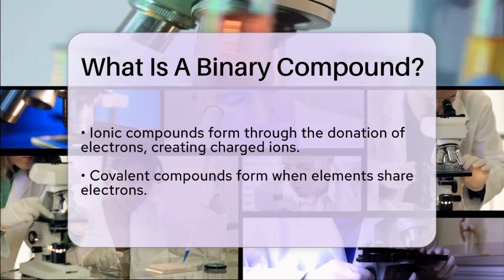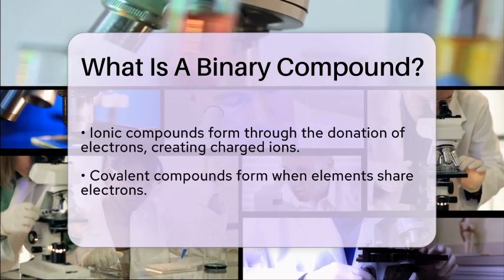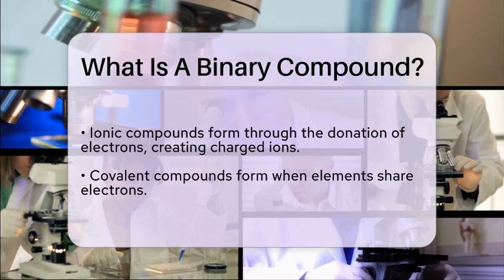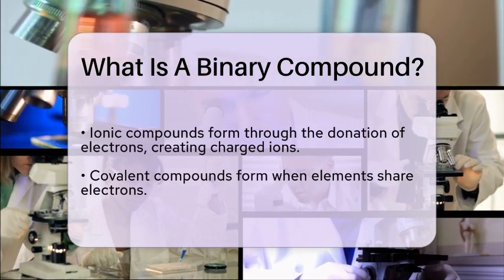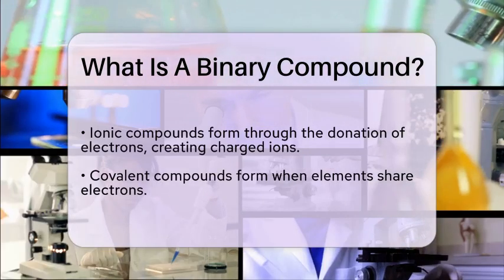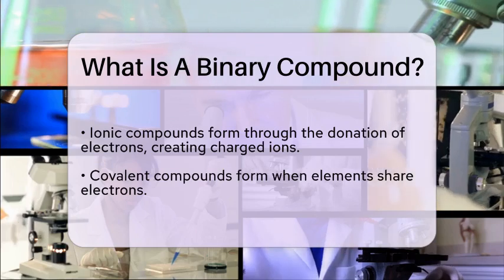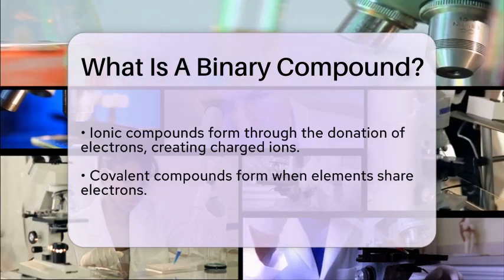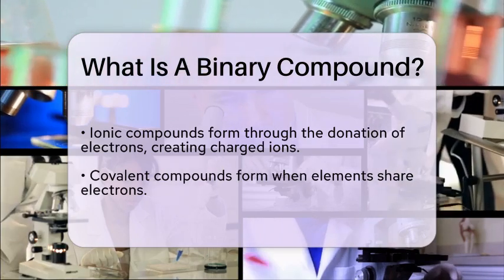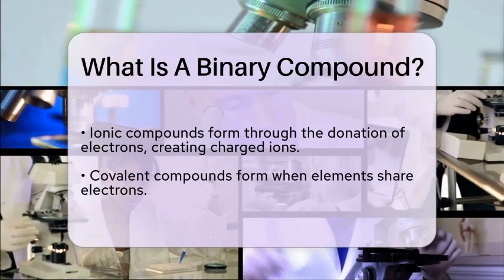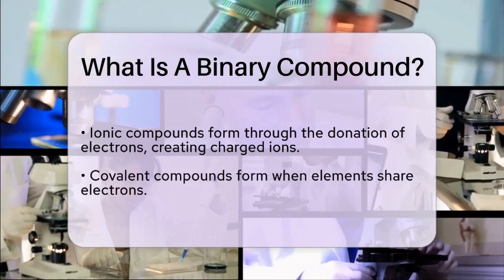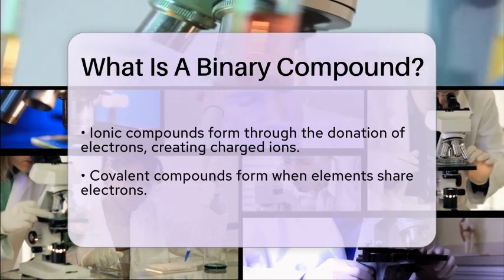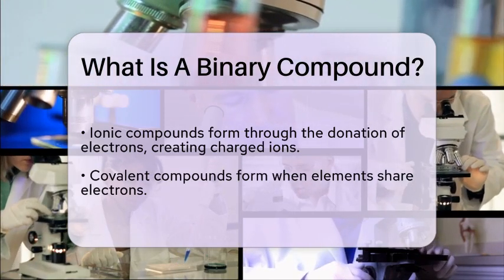Ionic binary compounds form when one element donates electrons to another, resulting in a bond between positively and negatively charged ions. On the other hand, covalent binary compounds form when two elements share electrons, creating a bond that holds them together.